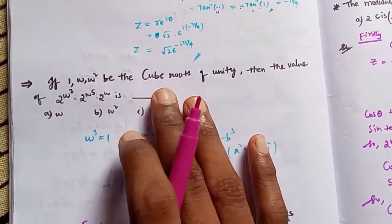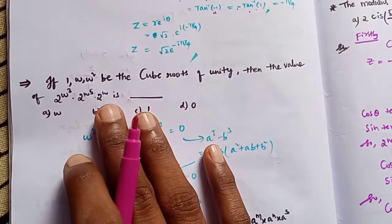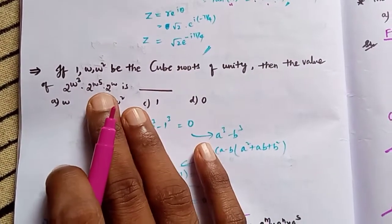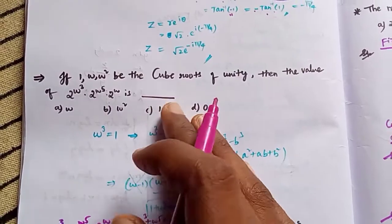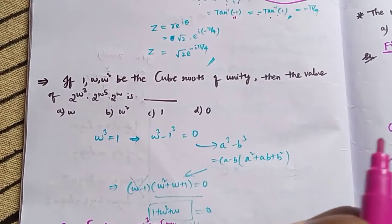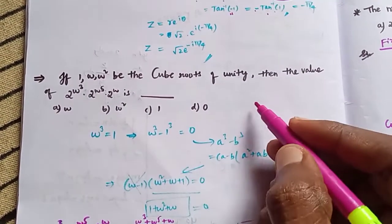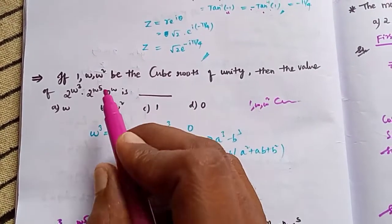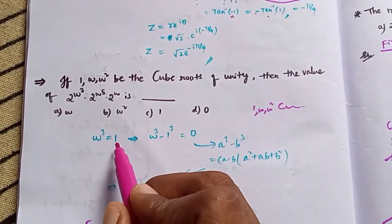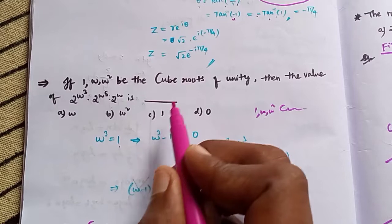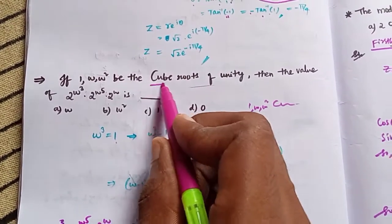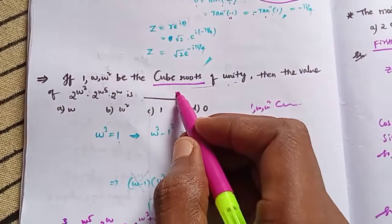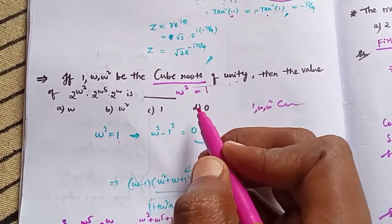If 1, ω, ω² are the cube roots of unity, then we need to find the value of 2ω³ + 2ω^5 + 2ω. The cube roots of unity satisfy ω³ = 1.